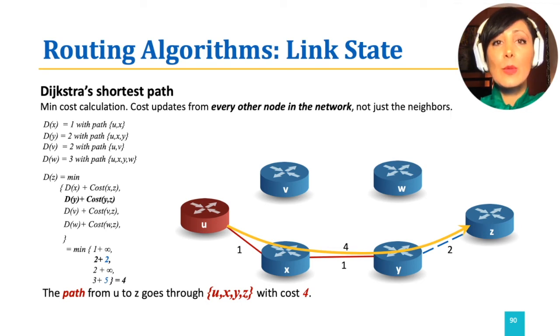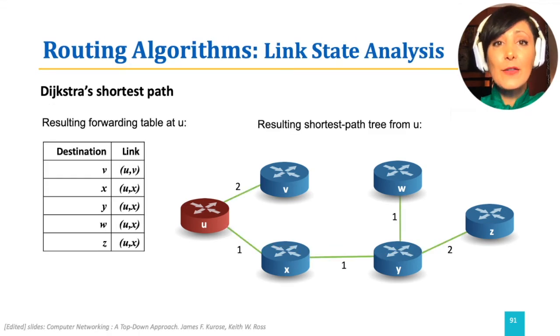Note that it will have the full path to the nodes, as well as the cost of the path. The resulting forwarding table at node U will have the destinations in the network with the next hop, or the first link to take, to reach that destination. This is exactly the same forwarding table resulted using distance vector with Bellman-Ford algorithm as we saw before for the same network.